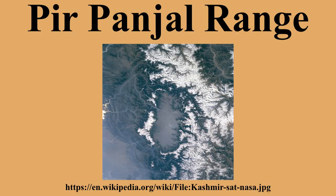Rohtang Pass is a mountain pass on the eastern Pir Panjal Range connecting Manali in the Kullu Valley to Keylong in the Lahaul Valley. The RG Pir Pass on the western Pir Panjal Range, on the road between Punch and Uri, is in the area of Kashmir administered by Pakistan. The pass, and therefore the strategically significant road, was taken from the control of Indian forces by the Pakistan army in 1947.